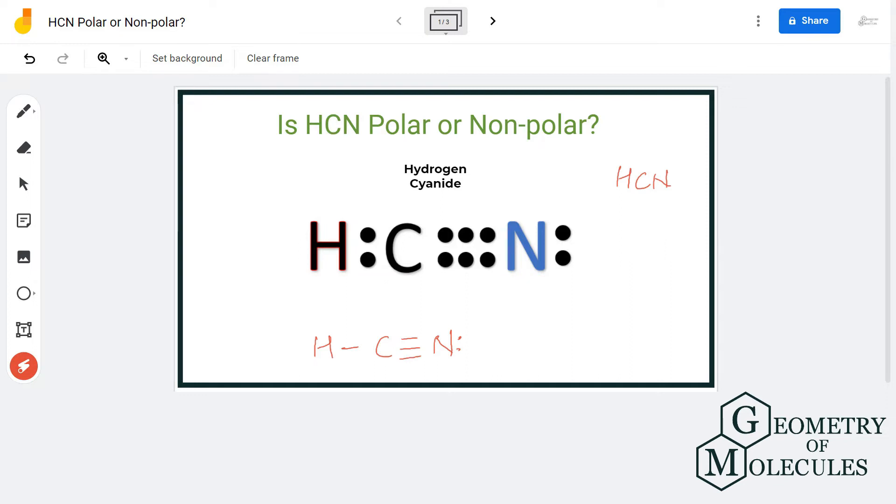To determine the polarity, we shall first look at the Lewis structure of this molecule. Here you can see that carbon is forming a triple bond with nitrogen atom and it is forming a single bond with the hydrogen atom.